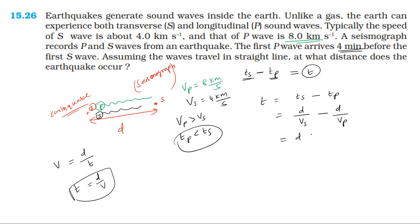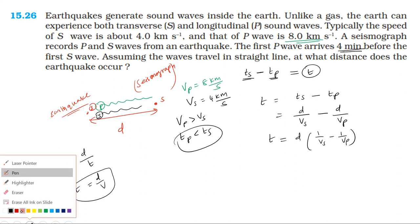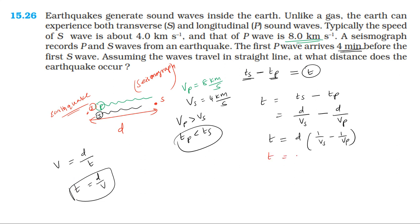Taking d common: d into (1/Vs minus 1/Vp) equals T. Rearranging, T equals D into (Vp minus Vs) divided by (Vp into Vs). Therefore, D equals Vp into Vs into T divided by (Vp minus Vs).